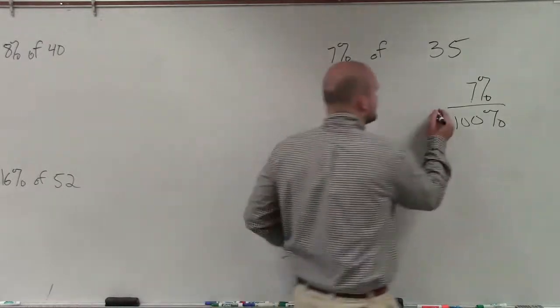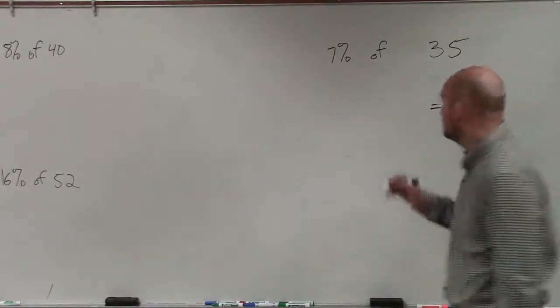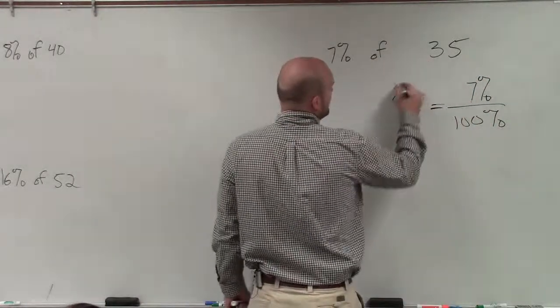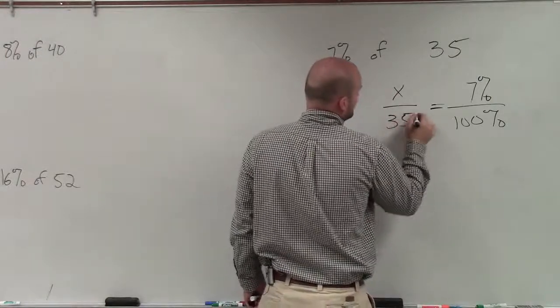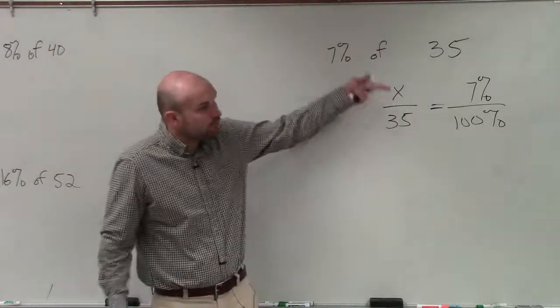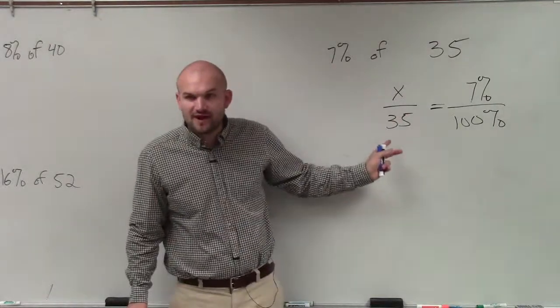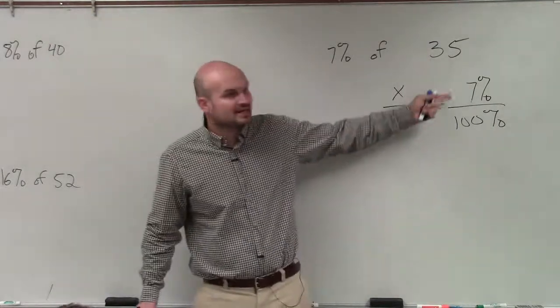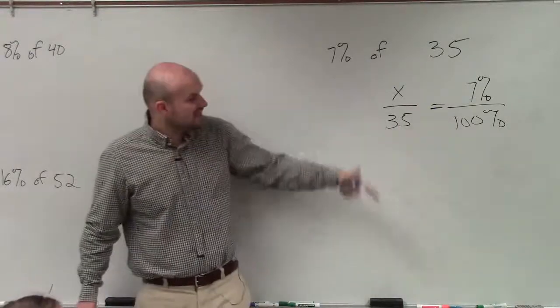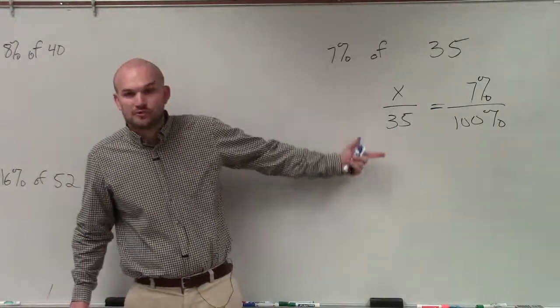So if we're going to constrain a proportion, then it looks something like this: x over 35. We basically want to see what portion is going to be 7% of 35. Just like 7% is of 100%, what is that exact portion for x as to 35?